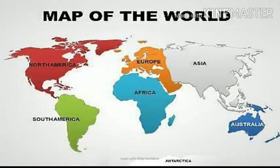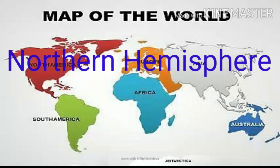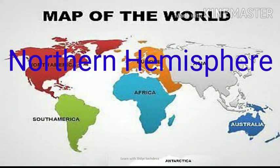There are seven major continents: Asia, Europe, Africa, North America, South America, Australia, and Antarctica. As it is clearly shown in the map, the greater part of the land masses is covered by the northern hemisphere. Therefore, this hemisphere is often called the land hemisphere.